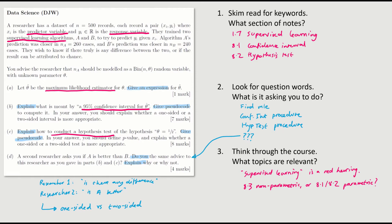One other comment, think through the course, which topics are relevant. It's obvious, there's something here about confidence intervals and hypothesis tests. We've seen two ways of doing them. We saw the parametric way in sections 8.1 and 8.2, and we saw a non-parametric way in section 8.3. So that's just something to bear in mind. Okay, let's start answering.